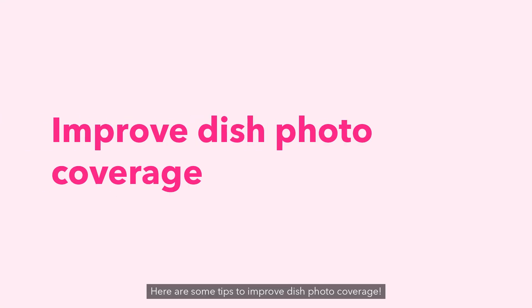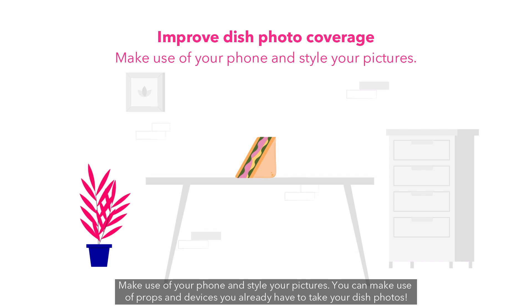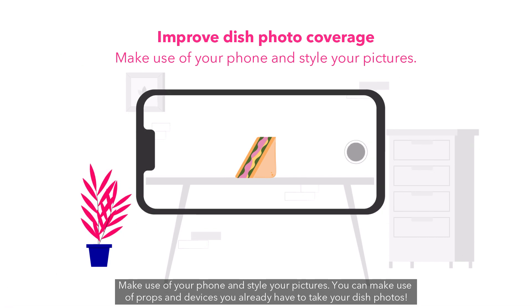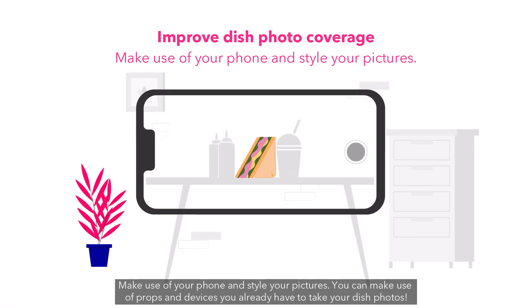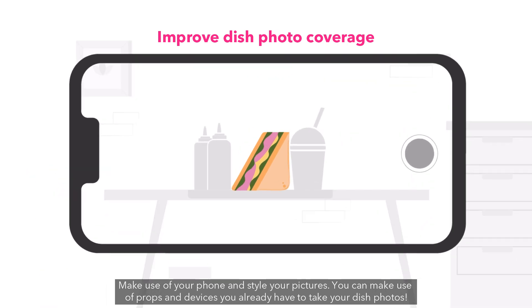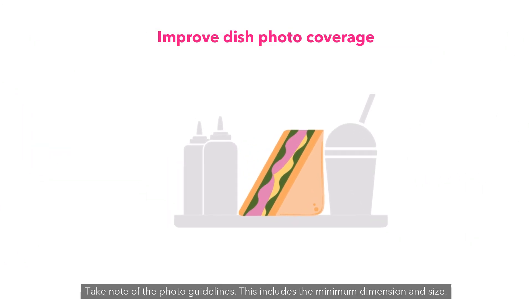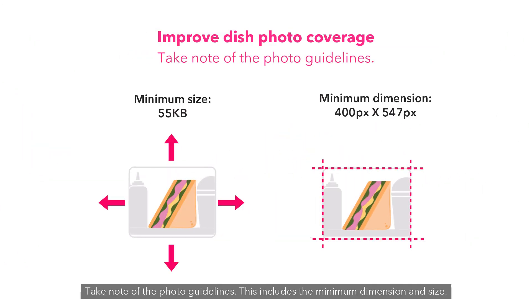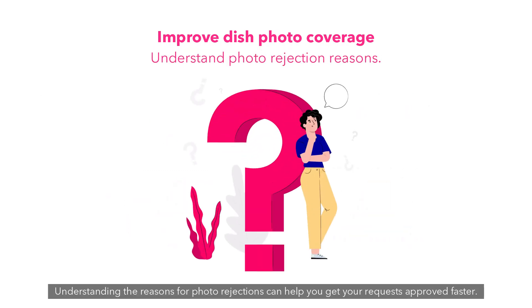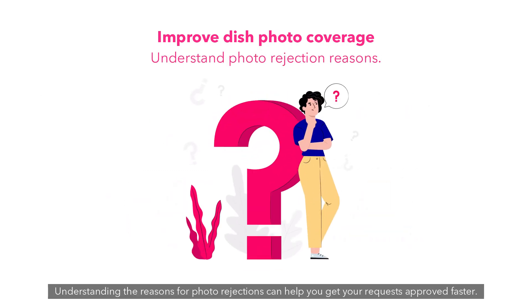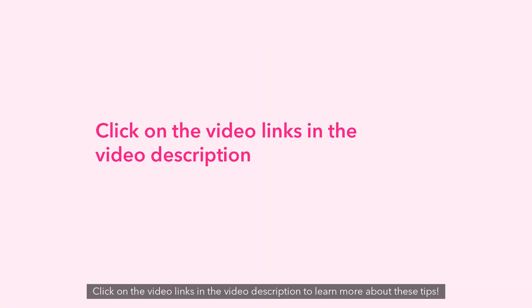Here are some tips to improve dish photo coverage. Make use of your phone and style your pictures. You can make use of props and devices you already have to take your dish photos. Take note of the photo guidelines, including the minimum dimension and size. Understanding the reasons for photo rejections can help you get your requests approved faster. Click on the video links in the video description to learn more about these tips.